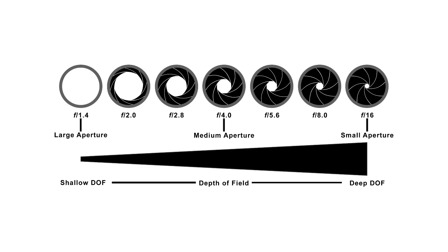The larger the opening of the diaphragm, or the lower the f-stop number, the greater the effect of depth of field. This is referred to as shallow depth of field. Setting the f-stop higher closes the diaphragm, making the opening smaller, and this reduces the depth of field effect, bringing more objects into focus. While a shallow depth of field allows us to focus in very tightly on an object, leaving everything in the foreground and background out of focus.